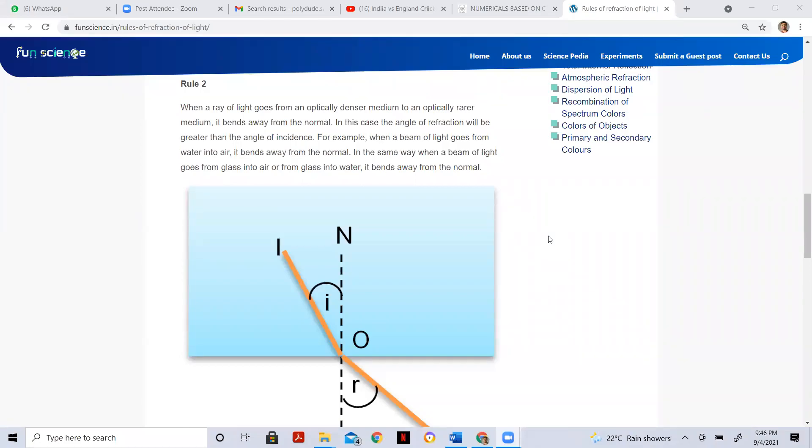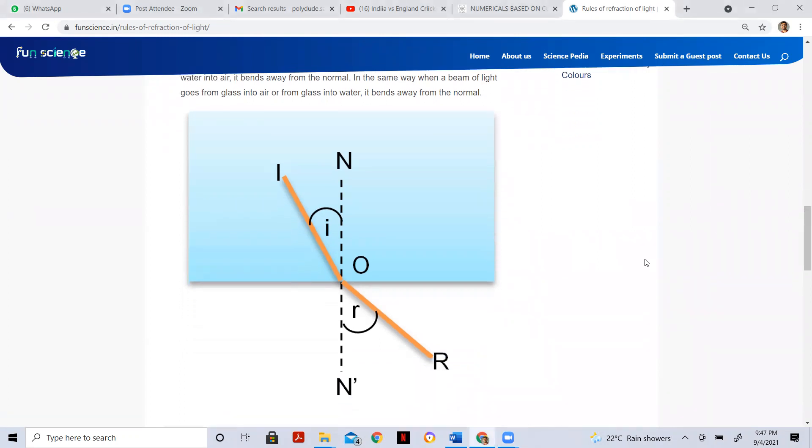Now, rule 2 says that when incident ray travels from denser medium to rarer, it bends away from the normal. Now, let us see how Snell's law proves this.